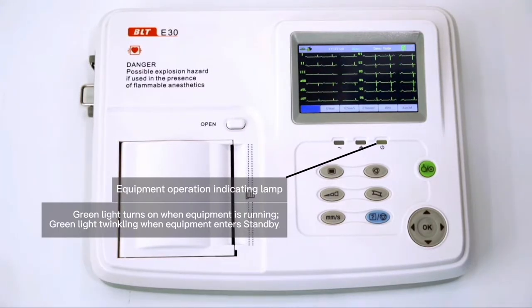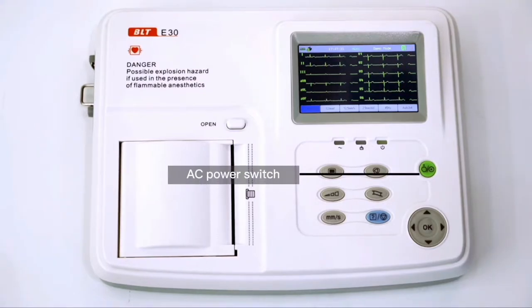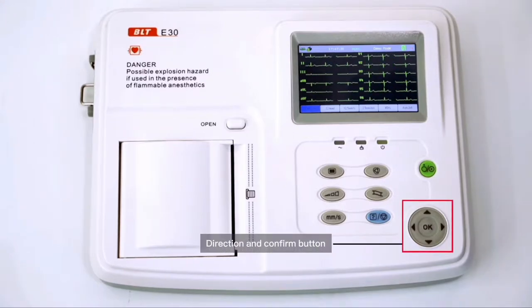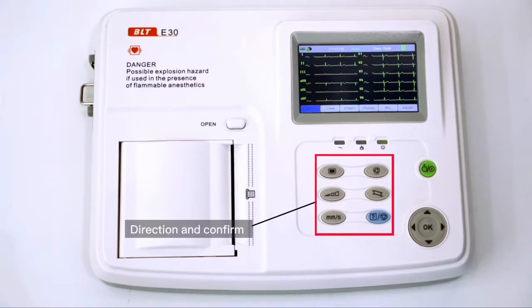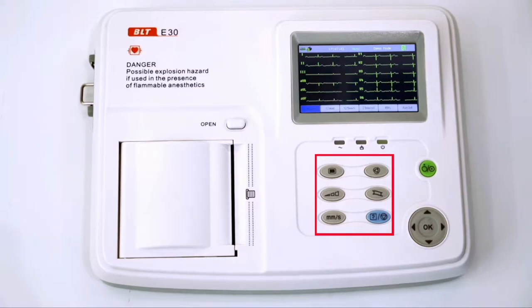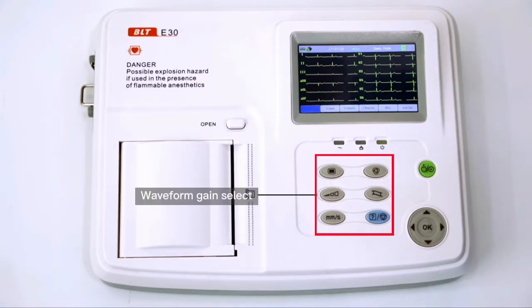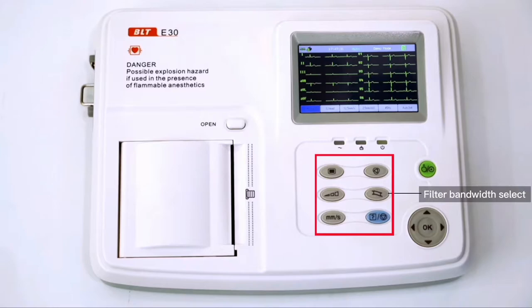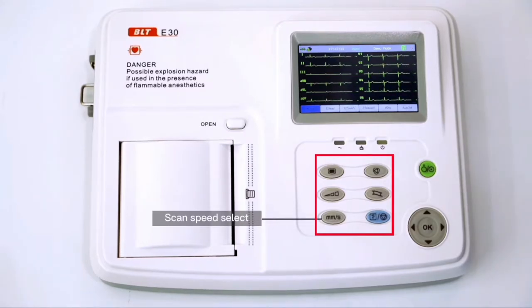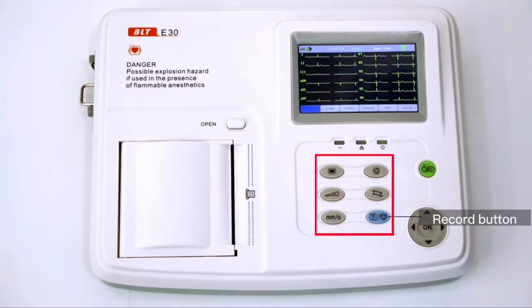This is equipment operation indicating lamp - green light turns on when equipment is running, green light twinkling when it enters standby. Press the power switch to turn the device on, press and hold it to turn the device off. Direction and confirm buttons are here. This is function button area, it includes menu button, working mode switch button, waveform gain select button, filter bandwidth select button, scan speed select button, and record button.